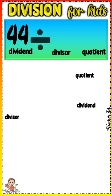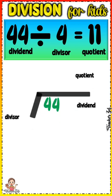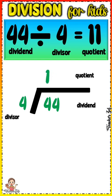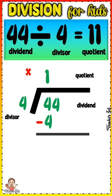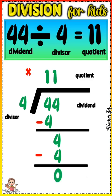44 divided by 4 equals 11. 4 divided by 4 equals 1. 1 times 4 equals 4. 4 minus 4 equals 0. Bring down 4. 4 divided by 4 equals 1. 1 times 4 equals 4. 4 minus 4 equals 0.